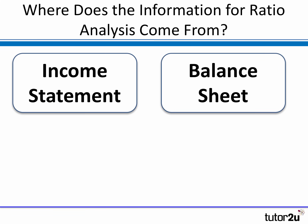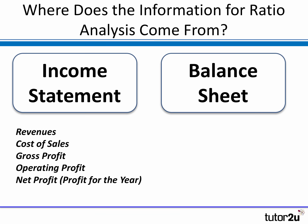Ratio analysis is essentially built around financial information from the financial records of the business. The two main sources of information you'll typically use when calculating ratios are the income statement, which is an historical record of the sales, the income, and the costs of a business over time. From the income statement, we draw out data such as revenues or income and sales, the cost of those sales, which enables us to calculate gross profit, operating profit, and net profit or profit for the year when looking at profitability ratios.